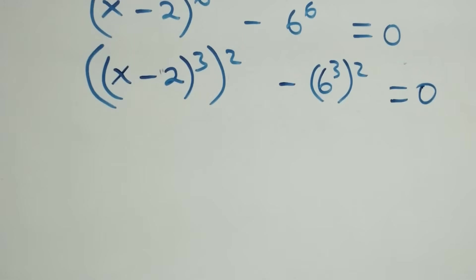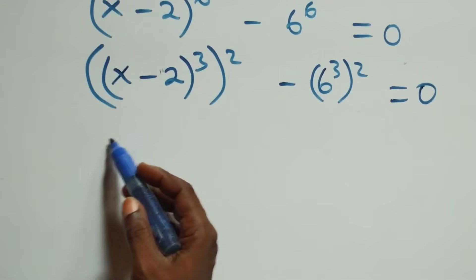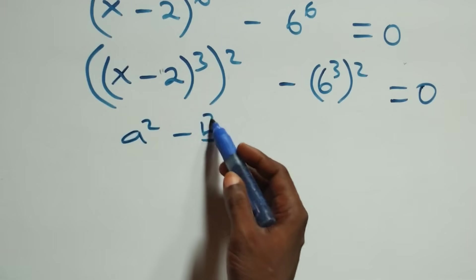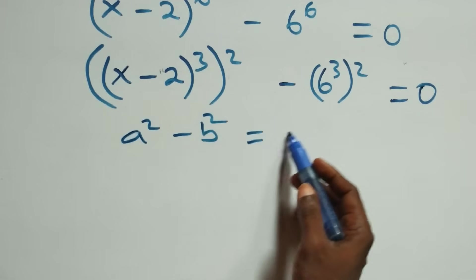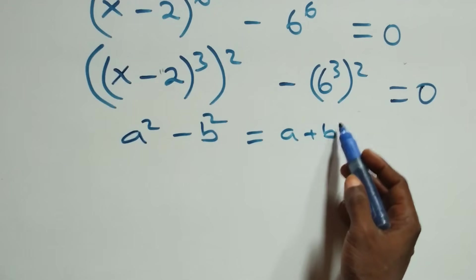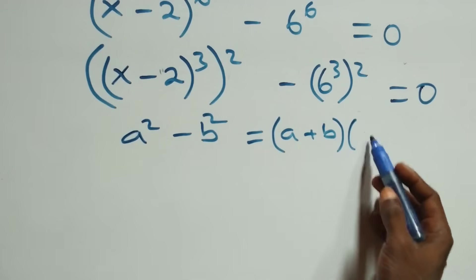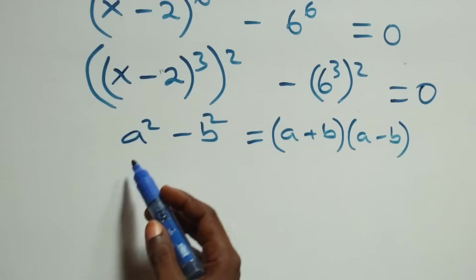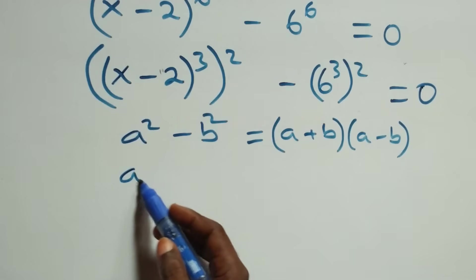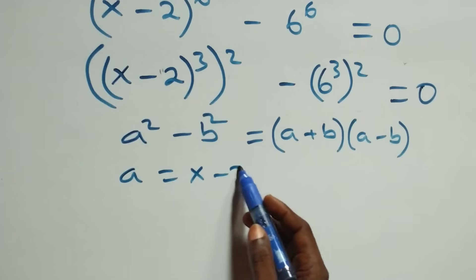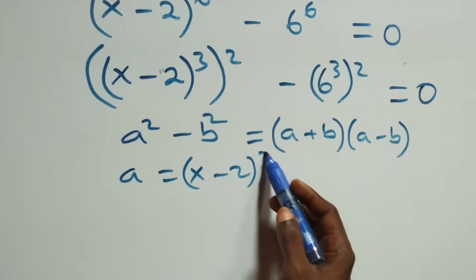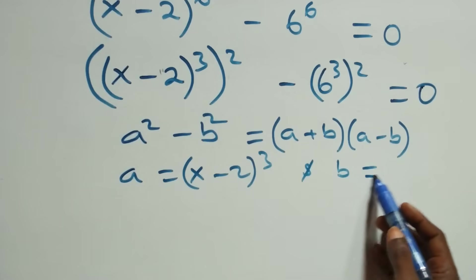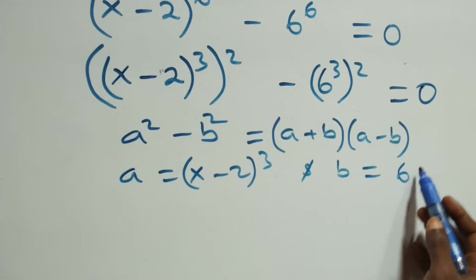This follows the difference of two squares: when we have a squared minus b squared, this is the same as a plus b into bracket, open bracket, a minus b. Here a stands as x minus two raised to power three, and b stands as six raised to power three.